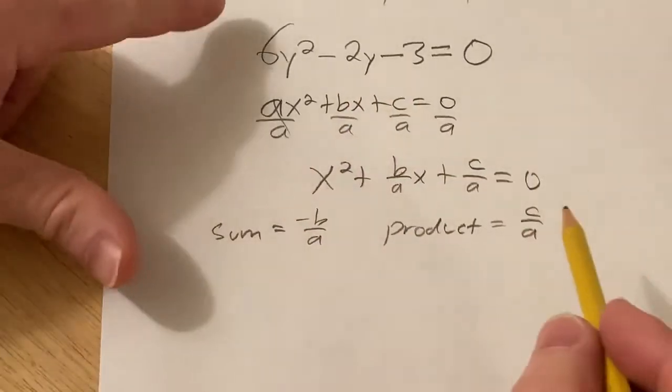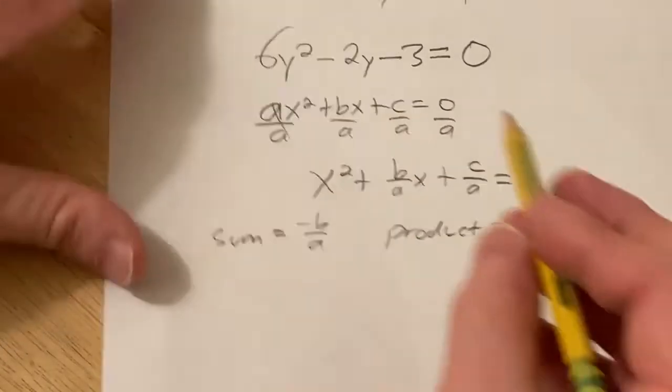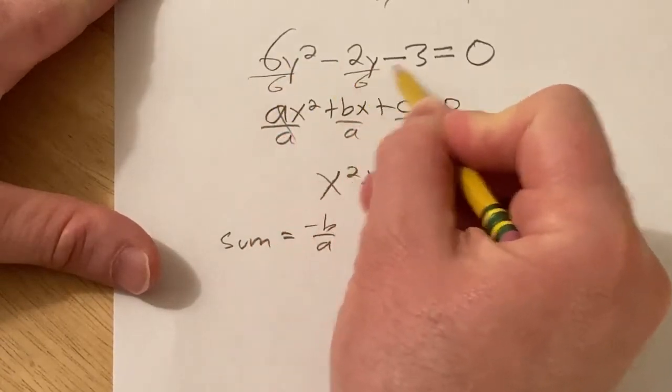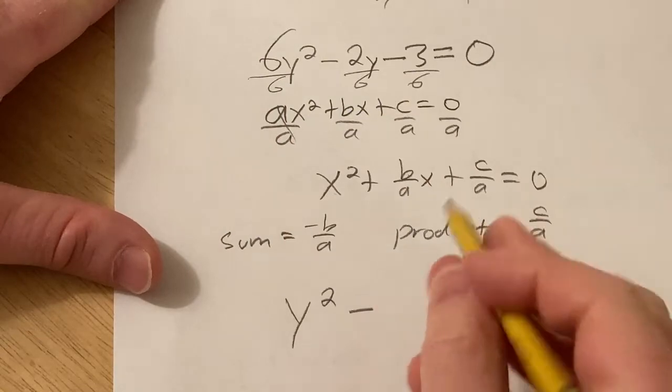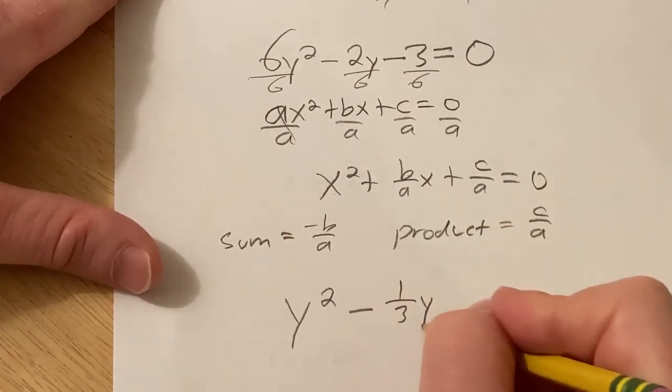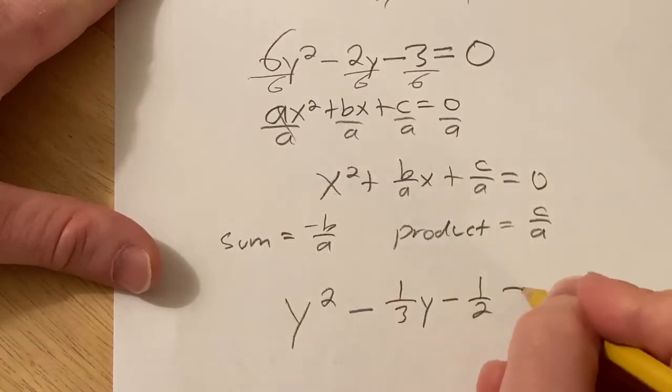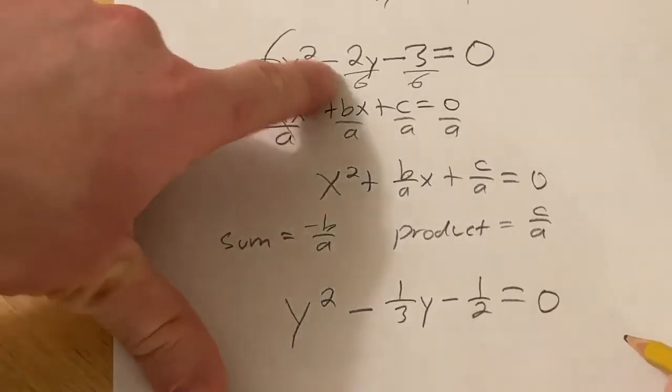So basically in this particular problem we simply have to divide everything by 6. So we'll get y squared minus 1 third y minus 1 half equals 0, right, dividing by 6.